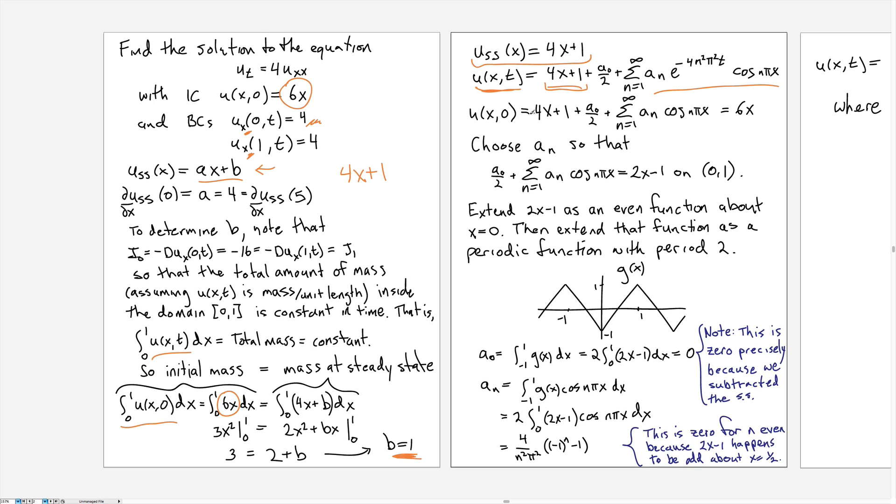Okay, so to determine the a_n, as always we evaluate at t = 0, and then we're looking for the a_n that ensure that the Fourier sum, the sum of all these cosine terms, comes out to 2x - 1.